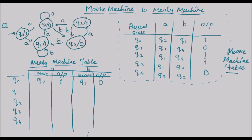Q1 is going to itself with a, and q1 has an output of 0. Q1 is going to q4 with b, and q4 has an output of 0. Q2 is going to q1 with a, and q1 has an output of 0. Q2 is going to itself with b, and q2 has an output of 1. Q3 is going to q1 with a and q1 has an output of 0. Q3 is going to q4 with b.